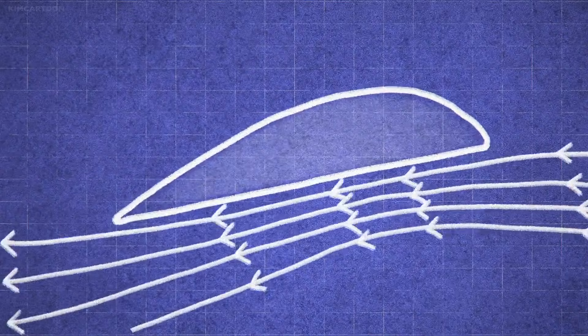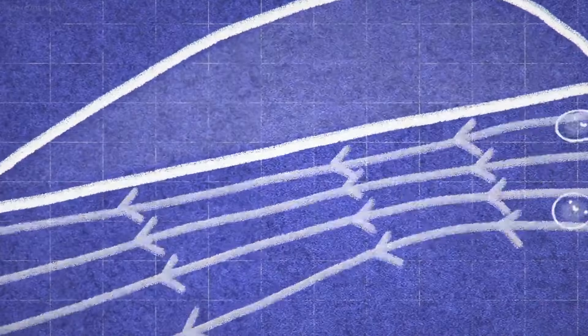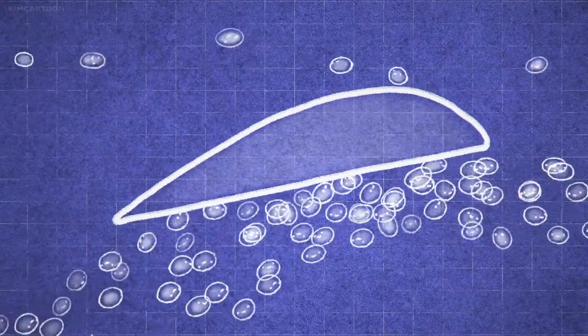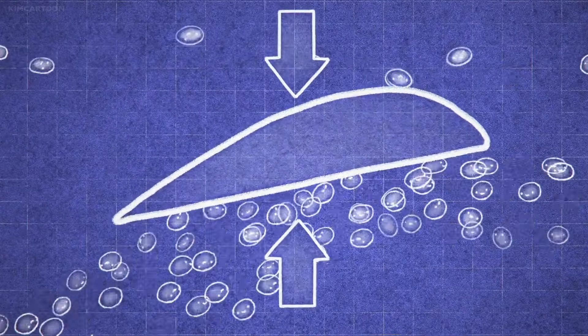The air on bottom gets all bunched up, creating pressure. While the air on top speeds quickly along, so its force on the wing is lesser.